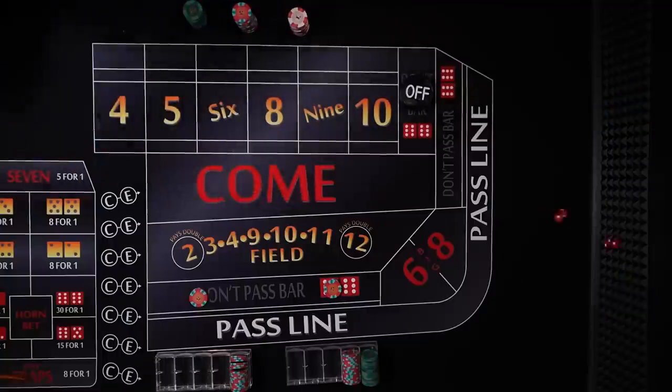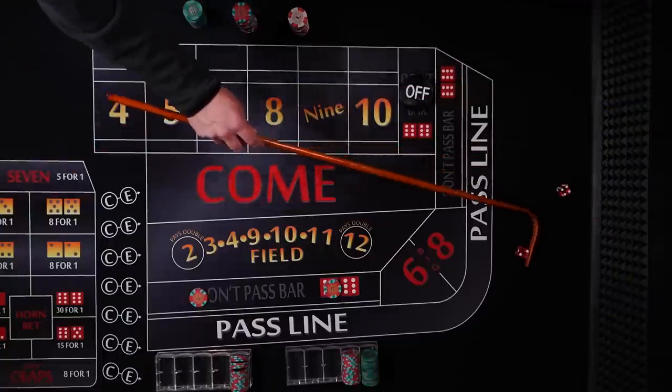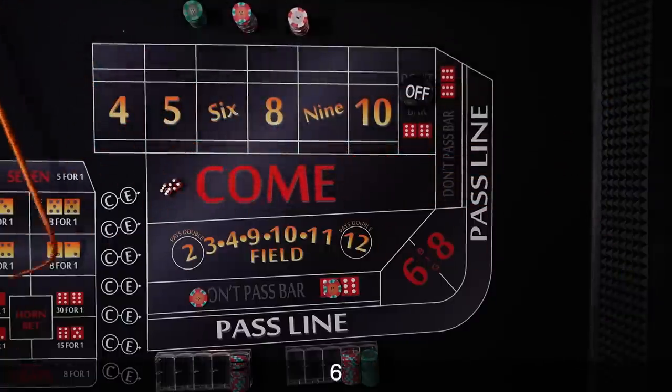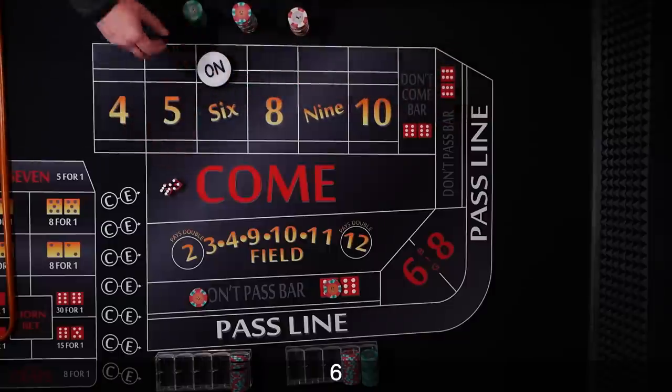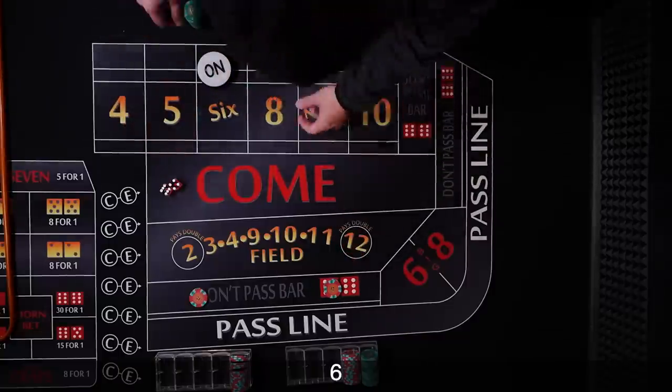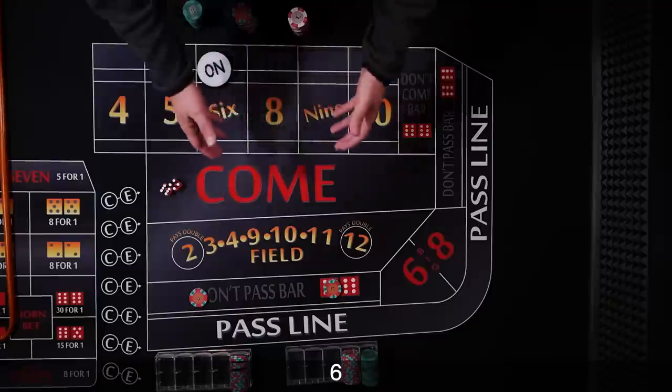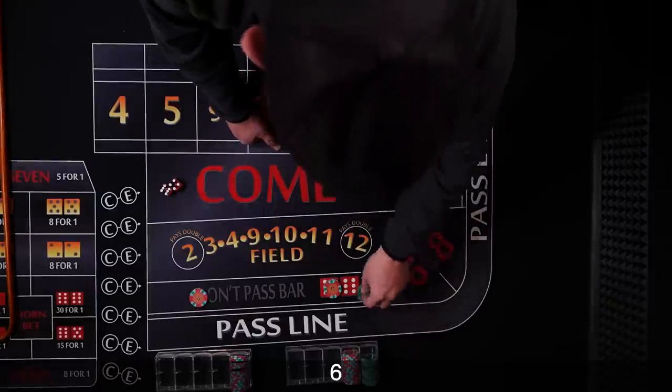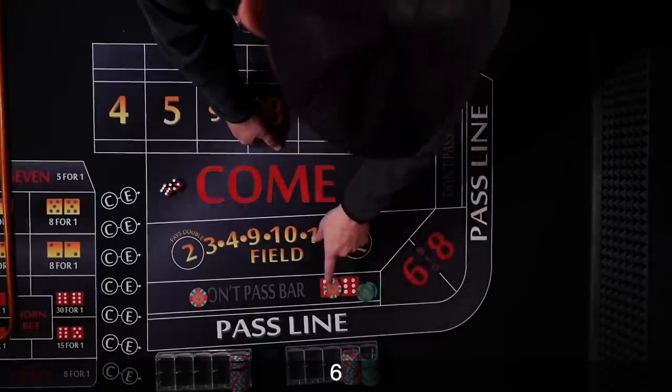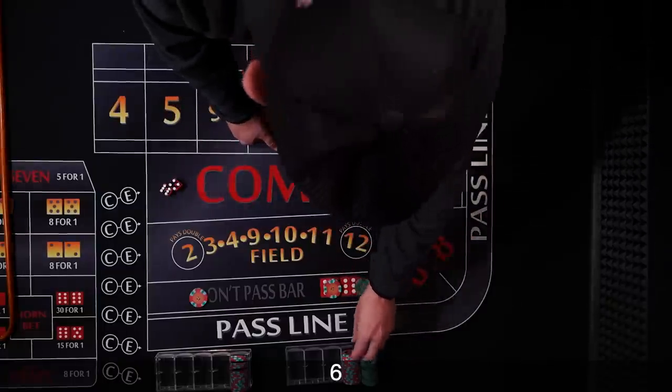So new shooter coming out. Here we go. And it's going to be 6. 6 is the point. So laying odds on a don't come table with 3, 4, 5 times odds is really easy. It's always going to be 6 times your flat bet. So 6 times 10 is going to be $60.